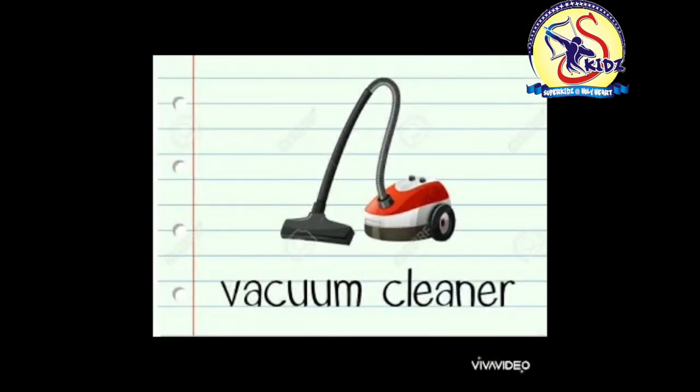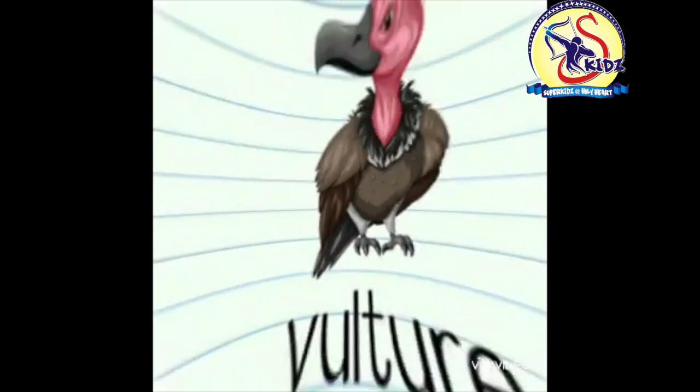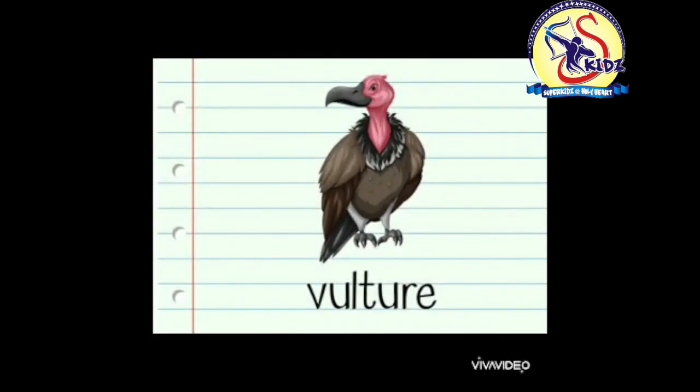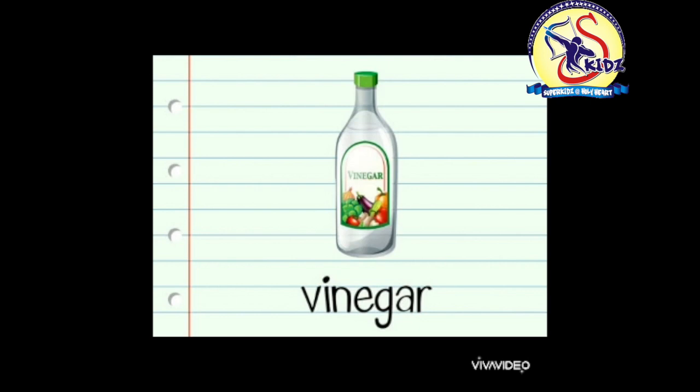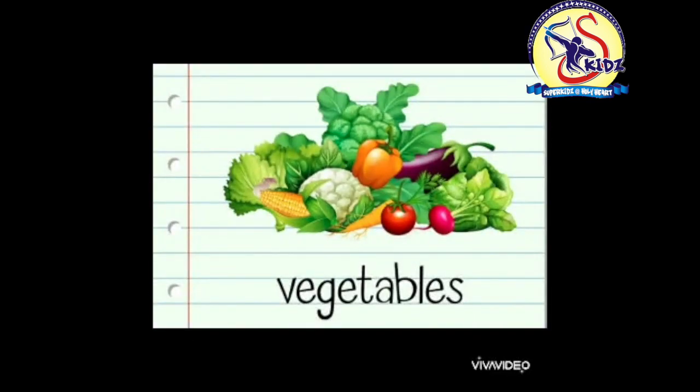Next picture is of a vacuum cleaner. 'Vvv' vacuum — repeat: 'vvv' vacuum. Next picture is of a vulture. 'Vvv' vulture — repeat: 'vvv' vulture. See the next picture — it is a vinegar bottle. 'Vvv' vinegar — repeat: 'vvv' vinegar. These are vegetables. 'Vvv' vegetables — repeat: 'vvv' vegetables.